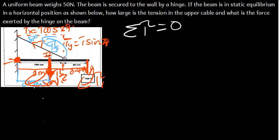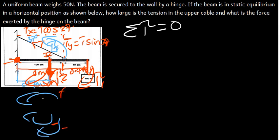We have one torque going in one direction and two torques going in the other direction. You can assign either as positive or negative — it is the same thing. I am going to assign the torques going in the clockwise direction to be negative. So: negative torque 1 minus torque 2 plus torque 3 equals 0.